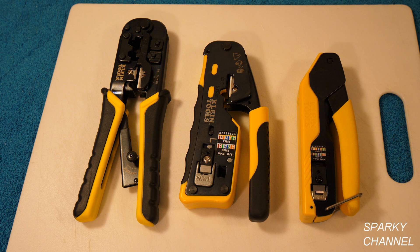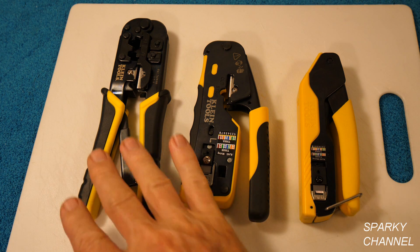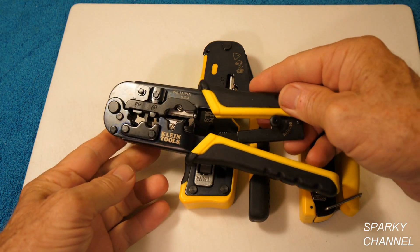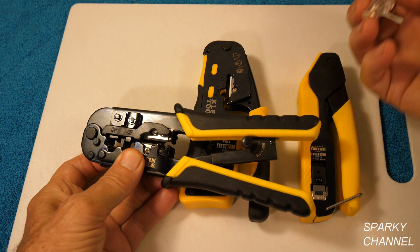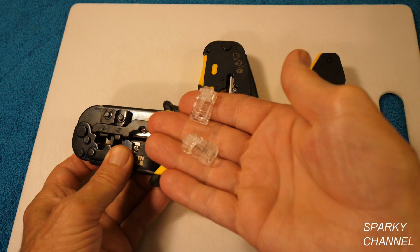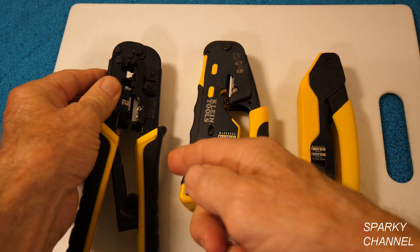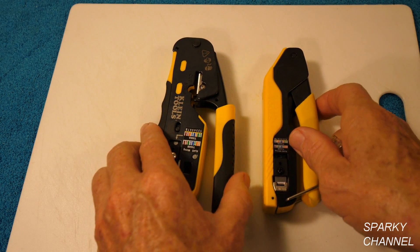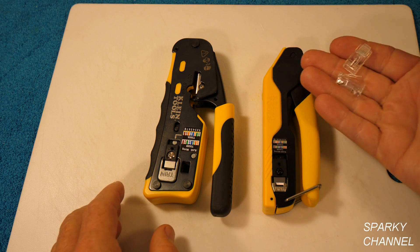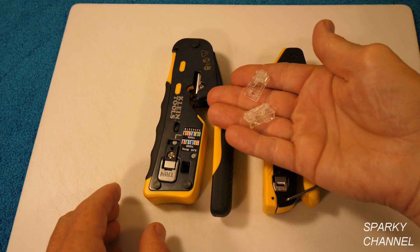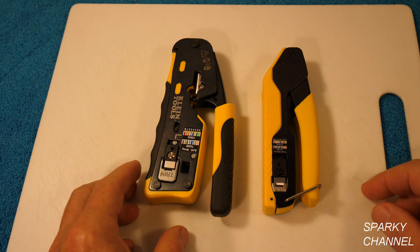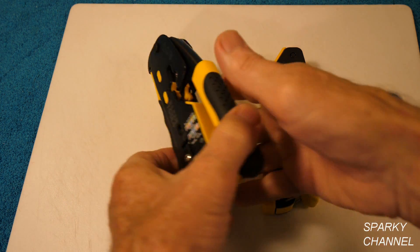So what's going on with modular crimpers these days? Here's one I made a video about some time ago and this is not a pass-through type. Now these days we have these pass-through crimpers that have just about made these obsolete. Let's just get that out of here. I don't want to deal with it anymore.